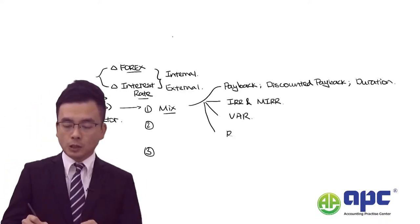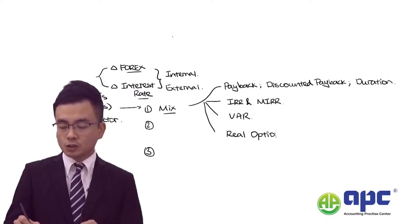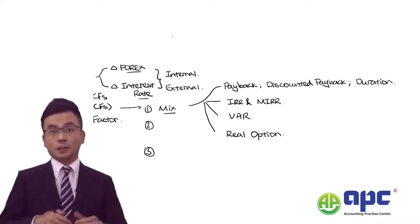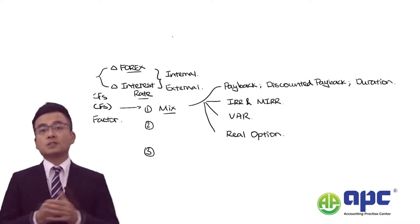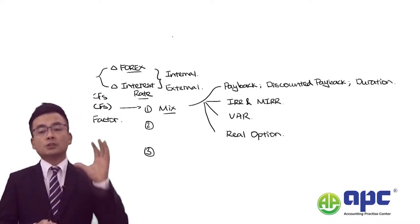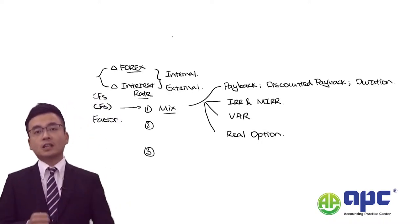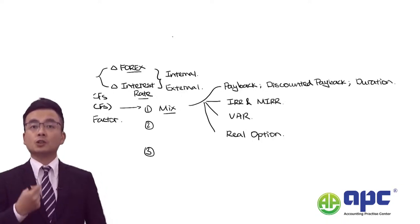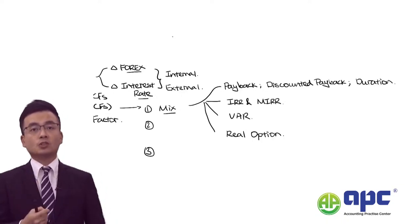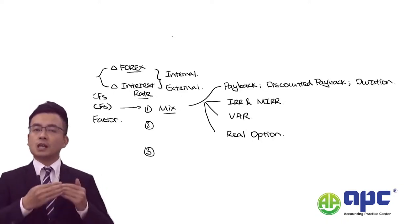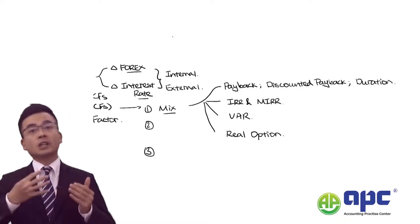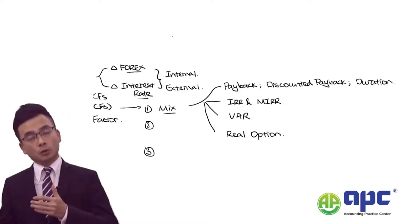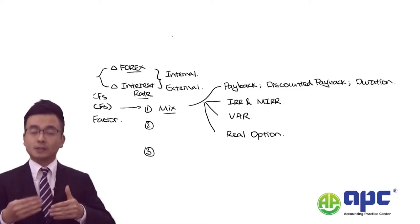Finally, we will be looking at using the Black-Scholes option pricing model to calculate the real option value for a particular project. Not only do we look at the NPV of a project, but we also need to consider the subsequent opportunity to expand the project or to get rid of it at some point in the future.